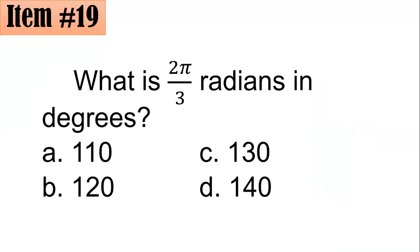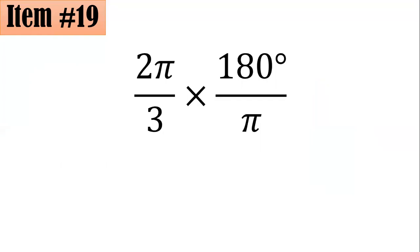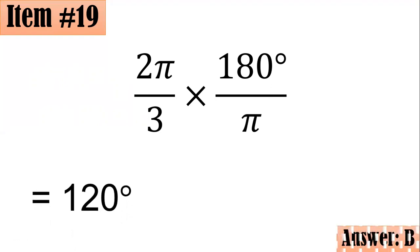Number 19: What is 2π over 3 radians in degrees? Did you go for 110, 120, 130, or 140? To convert radians to degrees, multiply by the conversion factor 180 degrees over π. Note: for degrees to radians, multiply by π over 180. In this case, the π's cancel, and 180 divided by 3 is 60, so 2 times 60 gives 120 degrees, letter B.